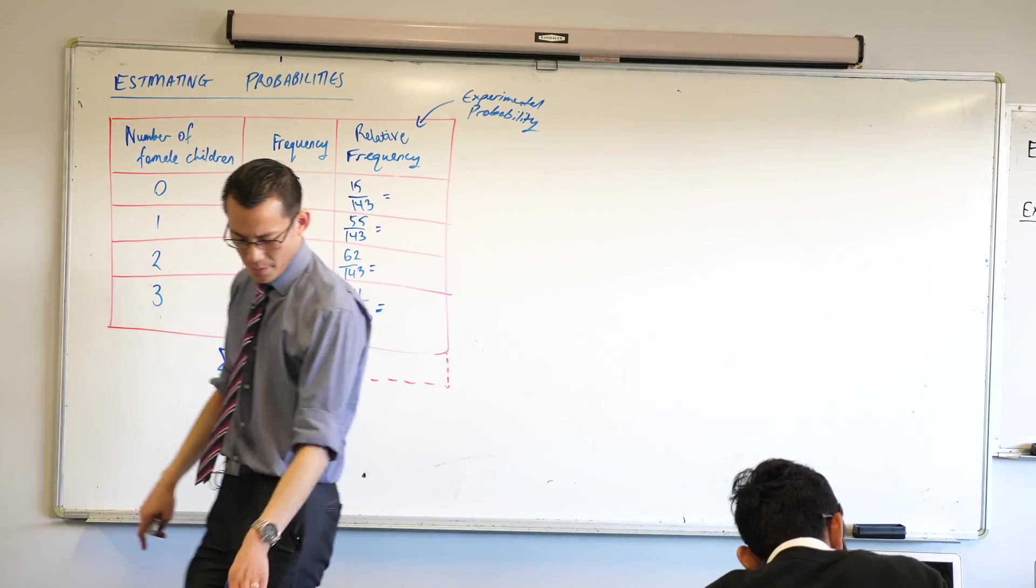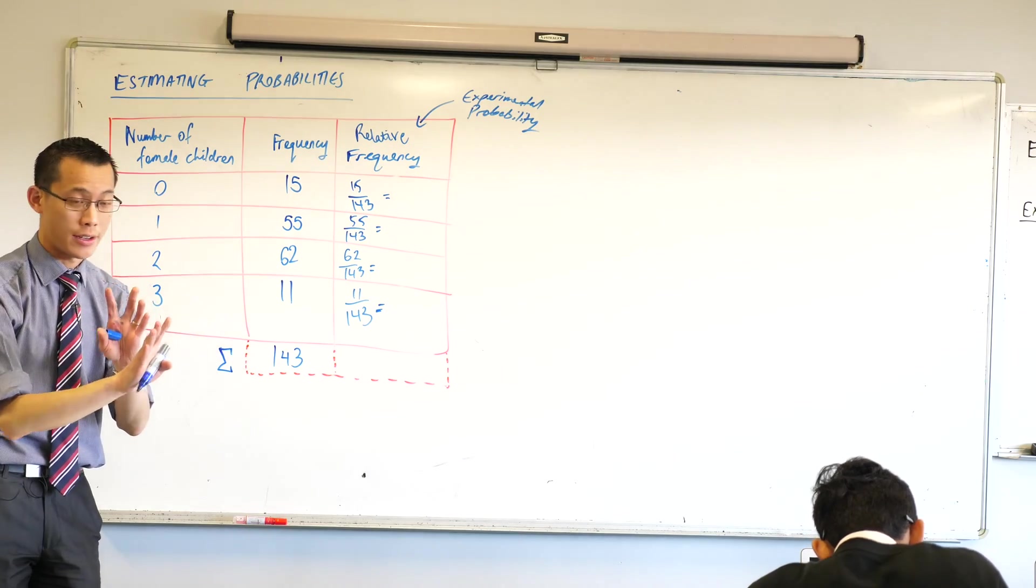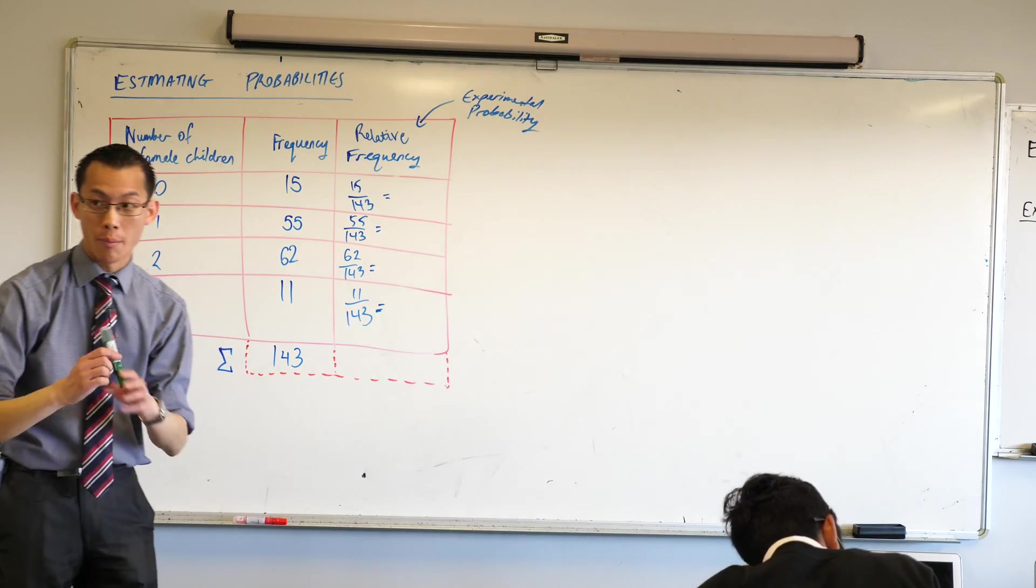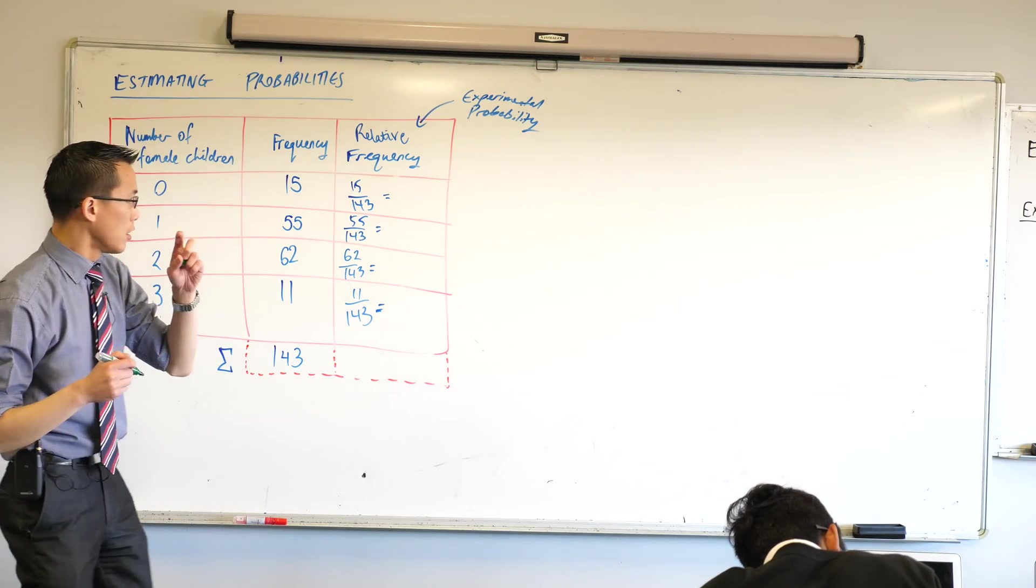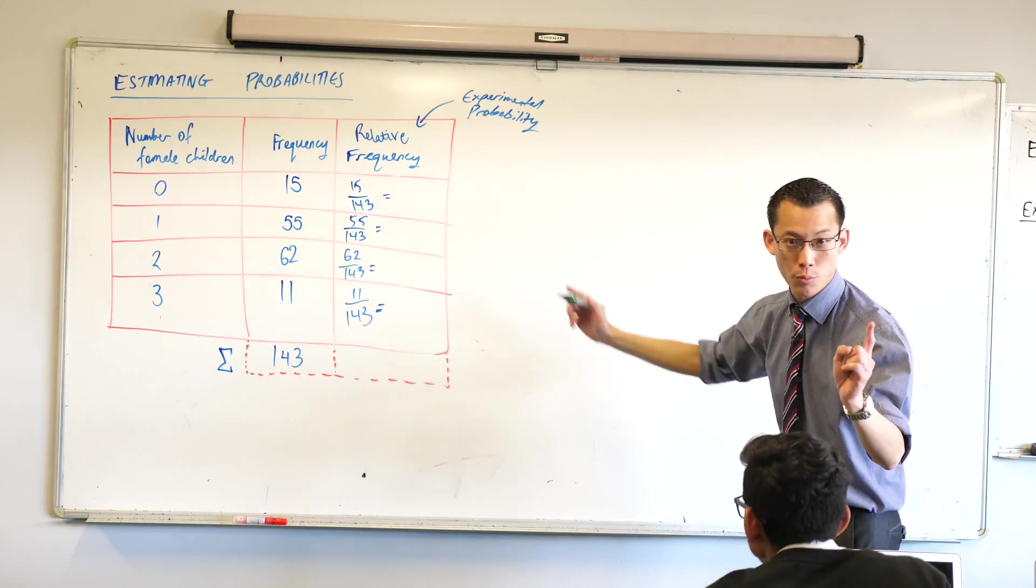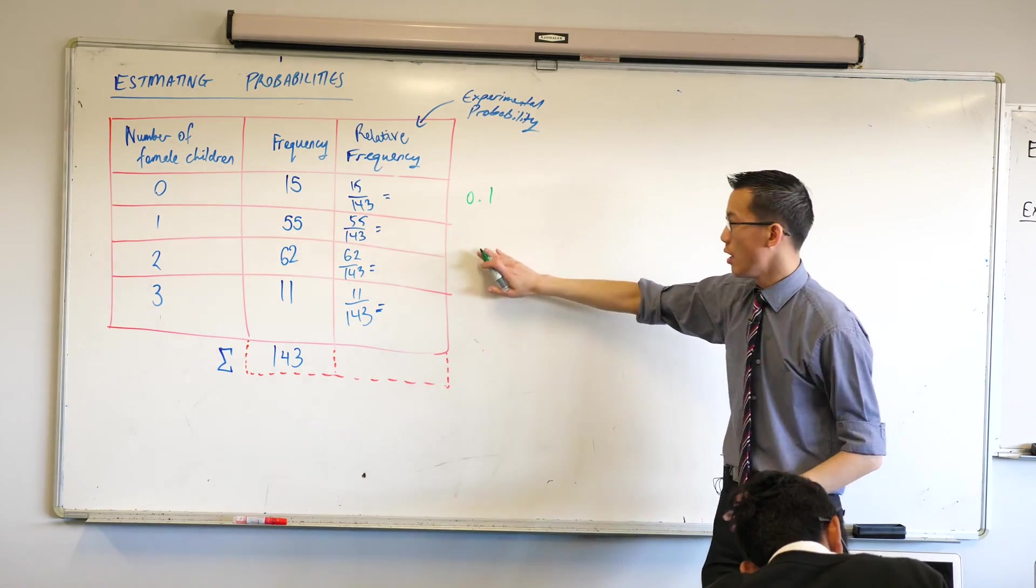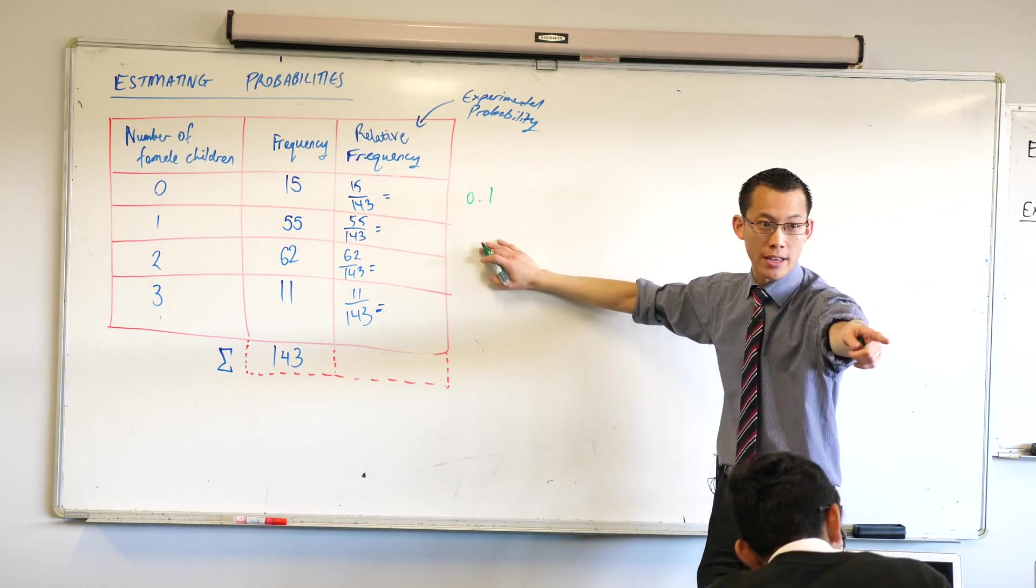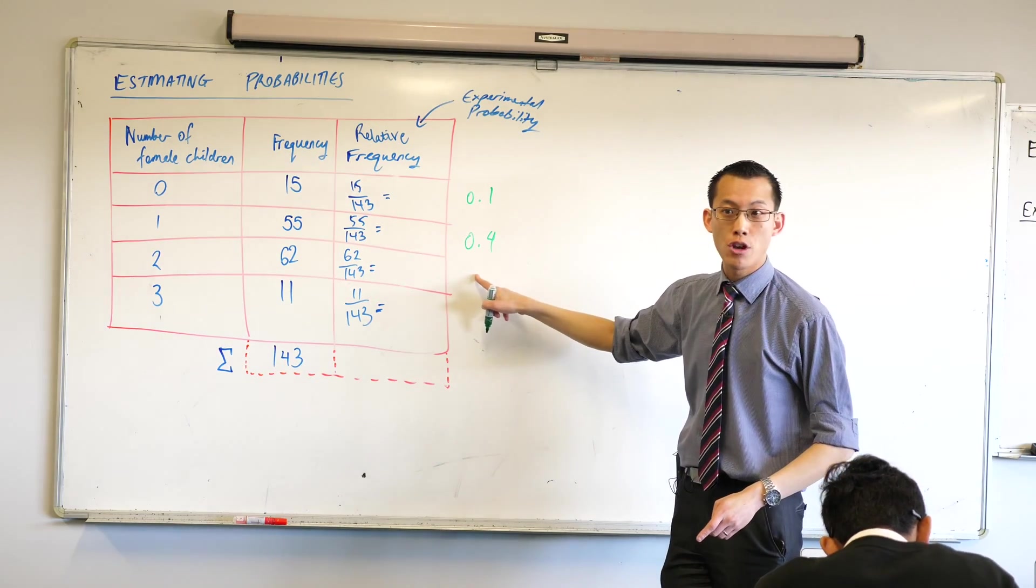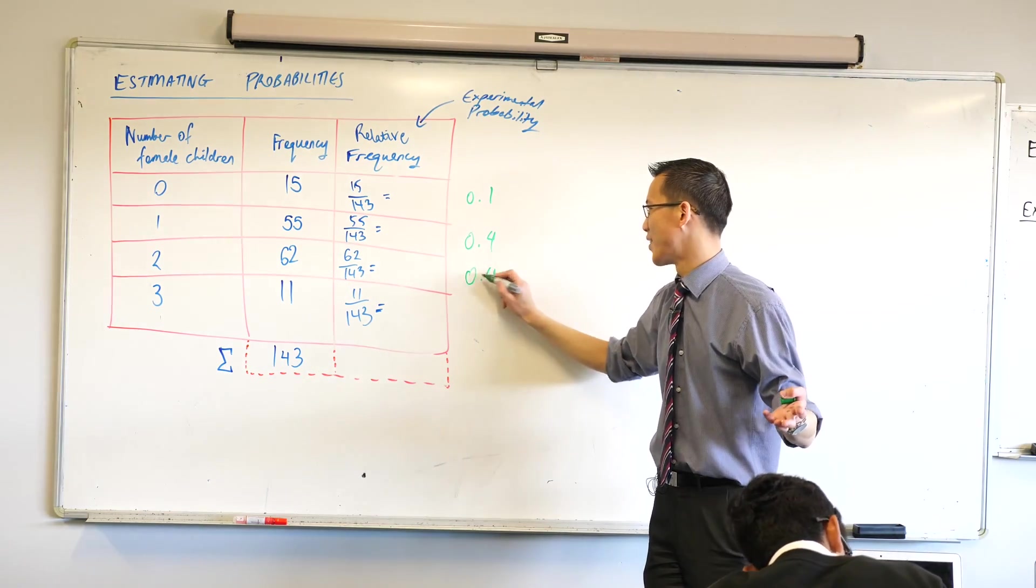Just hit equals, I just want the number there for a second. I am going to ask you guys to help me note this. Who worked out 15 on 143? Can you just give it to me to one decimal place? Zero point one. You don't need to write this down, I'm just going to take note of it. Who did 55 over 143? Zero point four. 62 over 143? Zero point four as well. And who got the last one, 11 on 143? Also zero point one.